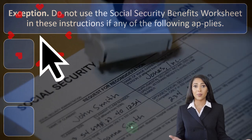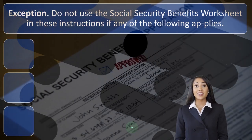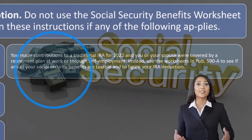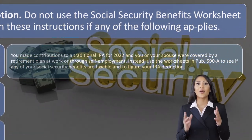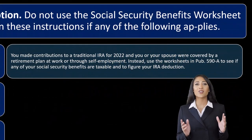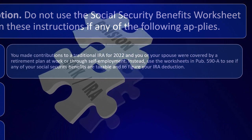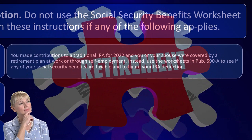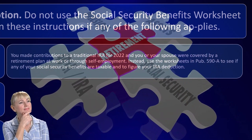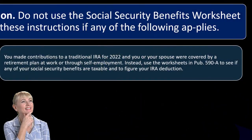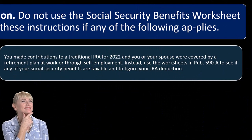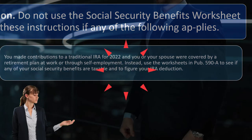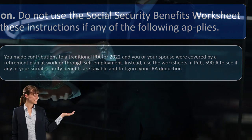Exception: do not use the Social Security benefit worksheet if you made contributions to a traditional IRA for 2022 and you or your spouse were covered by a retirement plan at work or through self-employment. Instead, use the worksheet in Publication 590-A to determine if any Social Security benefits are taxable and to figure your IRA deduction. In practice, software is quite useful for putting together that worksheet.